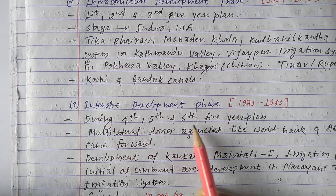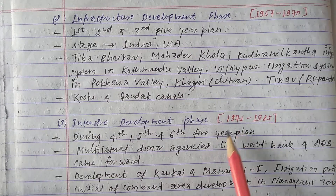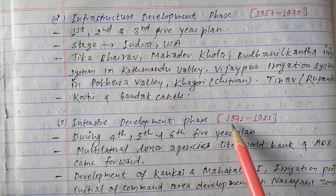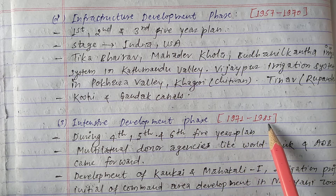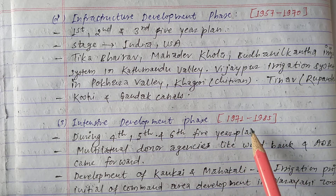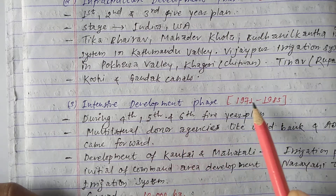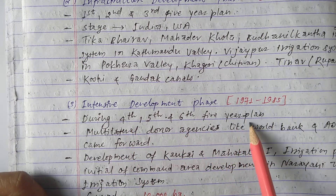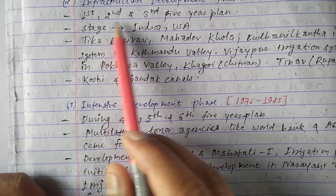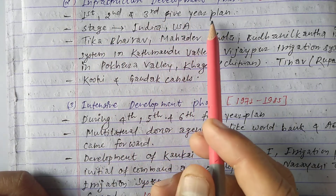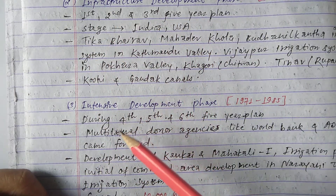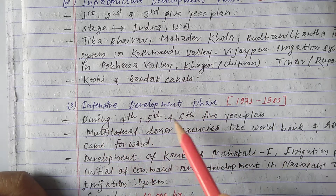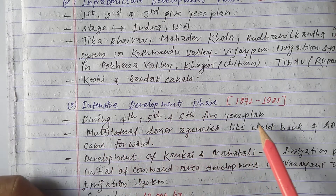After 1970, the Intensive Development Phase began, with a time period of 1971 to 1985. This phase corresponds to the fourth, fifth, and sixth Five Year Plans. After the first three plans under infrastructure development, the next three plans fall under the Intensive Development Phase.